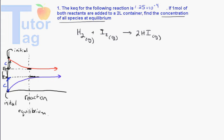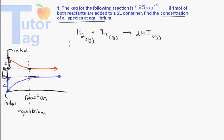You're always going to use an ICE table when you're given something about the initial amounts of a substance before equilibrium, and then maybe something at equilibrium. In the previous questions, we were already started at equilibrium so we didn't have to use an ICE table. Here we're going to use the ICE table to solve this question.